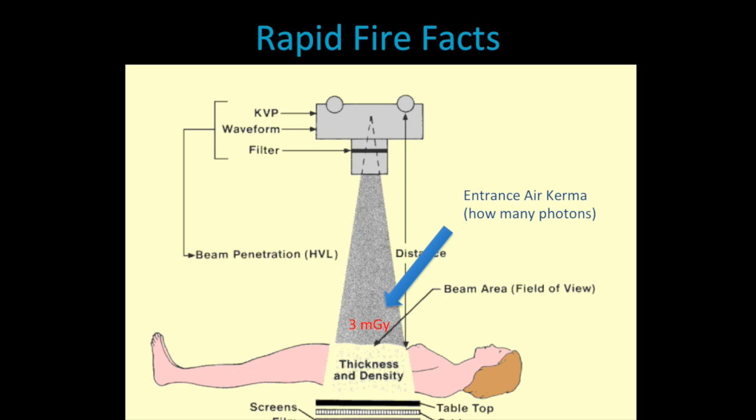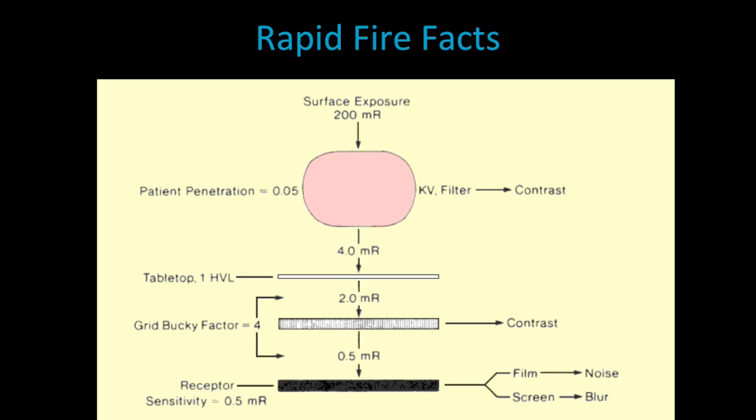So three milligrays in the abdomen will give you a framework. When you move to a chest radiograph, we know that because it's lungs and air we should have a lower amount of photons delivered, and we know that it's less than three milligrays. In fact it might be more like 0.1 milligrays, but we know that if we use three for the abdomen it's going to be much lower for the chest. The other fact that we should remember is that once we deliver the radiation, or the kerma, for example here we have 200, this is representing our patient. It goes through our patient, it goes through the tabletop, and by the time it comes out we already have about one percent.